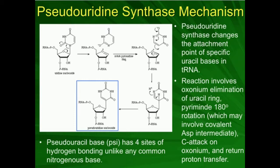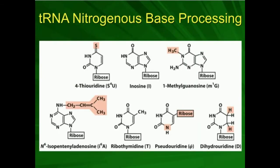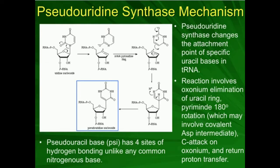Let's talk about how you make pseudouridine. This is a really important one, a very common one in transfer RNA. It's designated by the symbol, the Greek letter psi. So when you look here, that's the Greek letter psi for pseudouridine.